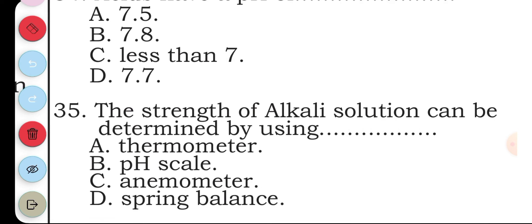Question thirty-five: the strength of alkali solution can be determined by using: A thermometer, B pH scale, C anemometer, D spring balance. The answer to question thirty-five is B, pH scale.